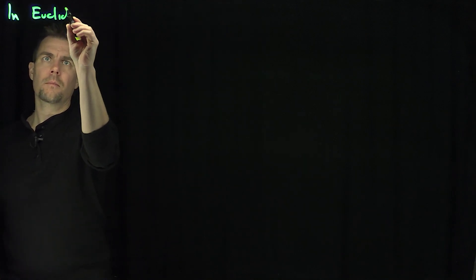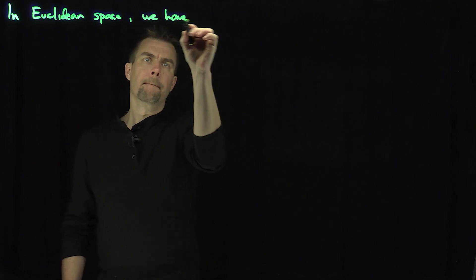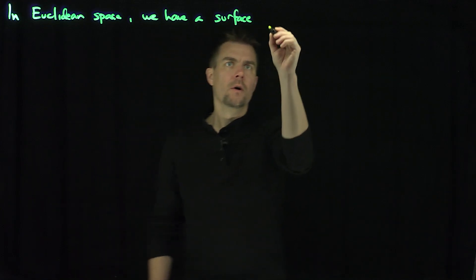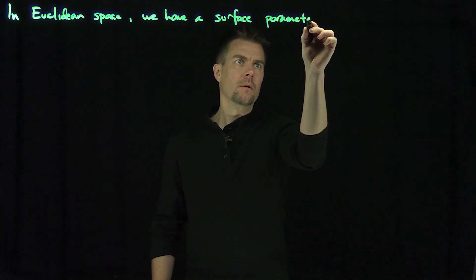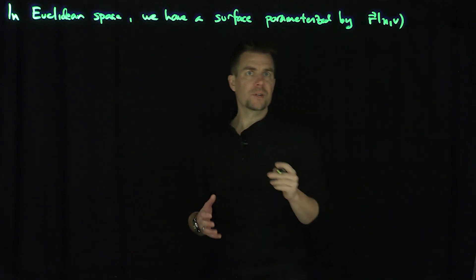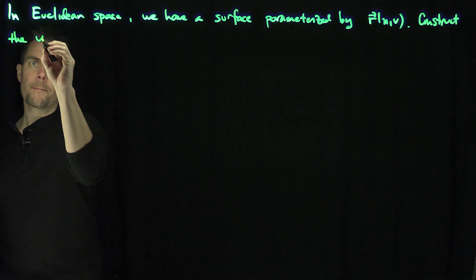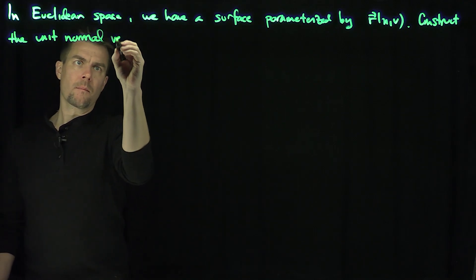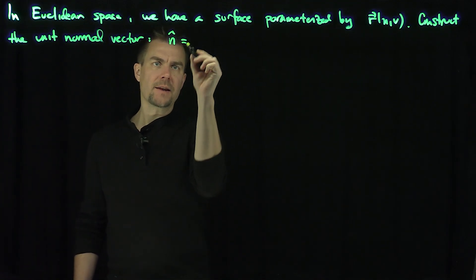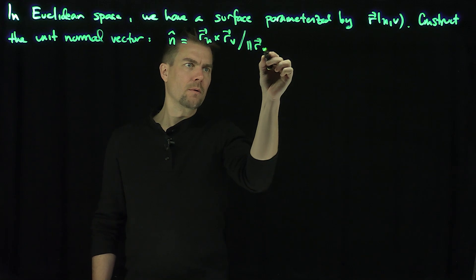Hello, students. In this video, we'll consider the second fundamental form of a surface. We'll assume we're in Euclidean space, where we have a surface parameterized by a function r of u and v. From this parameterization, we construct the unit normal vector to the surface, n-hat, which is r_u cross r_v over the length of r_u cross r_v.